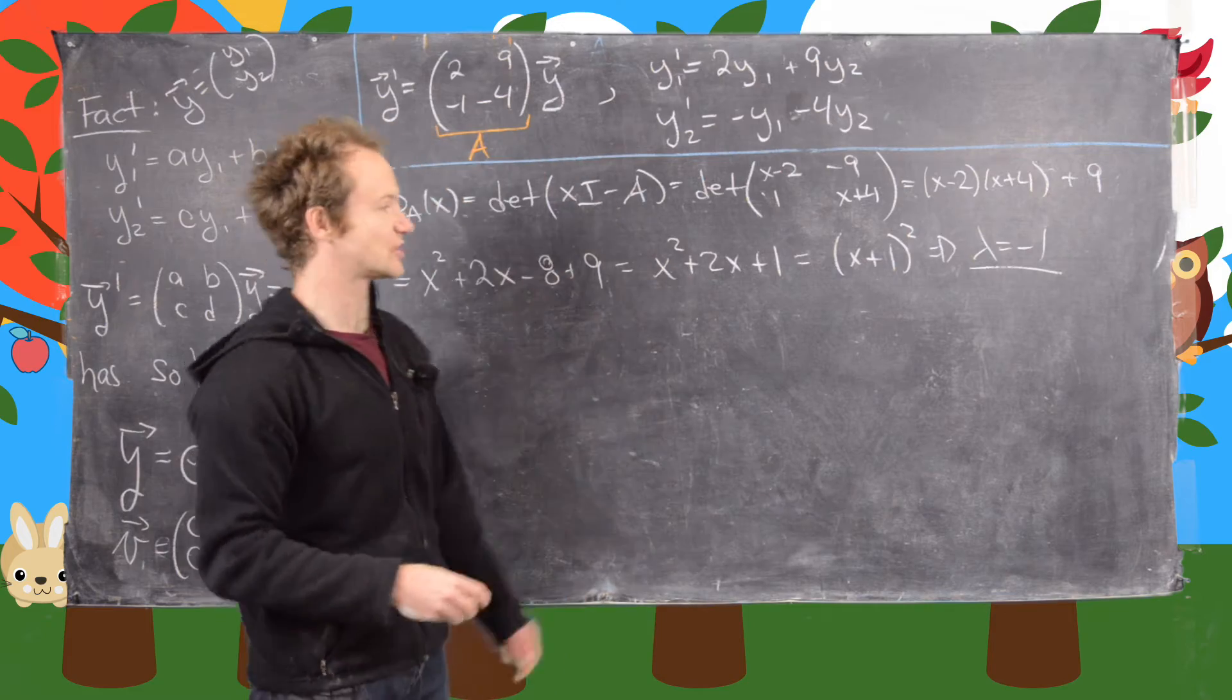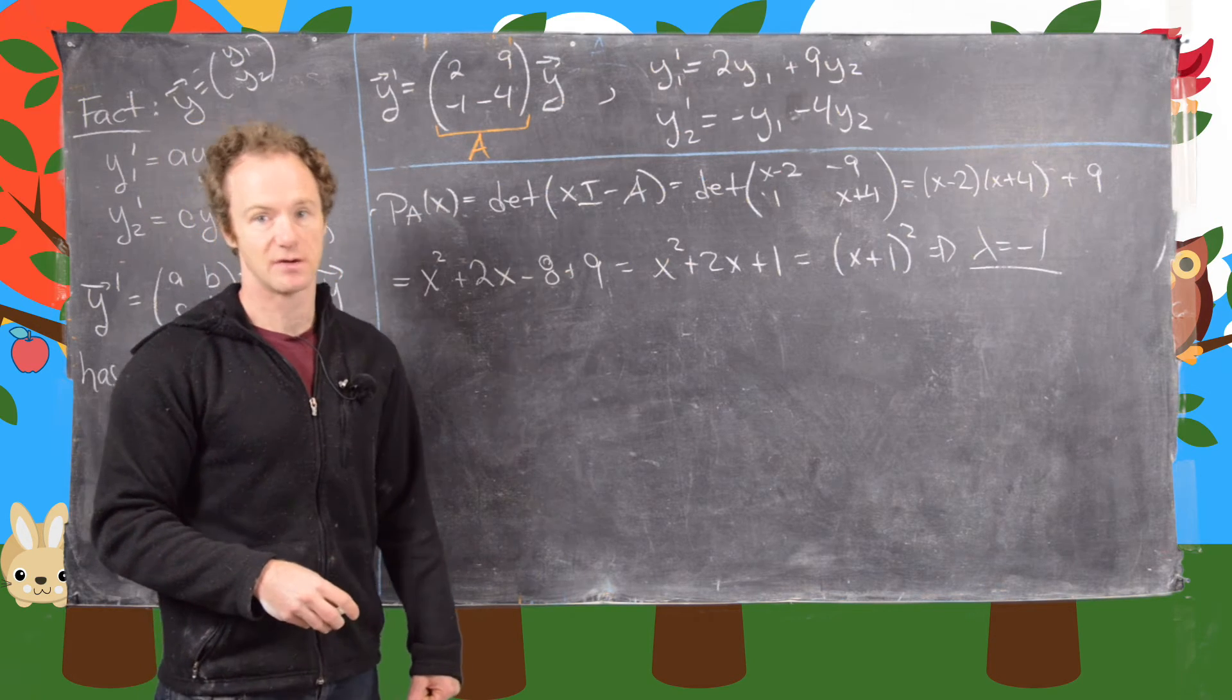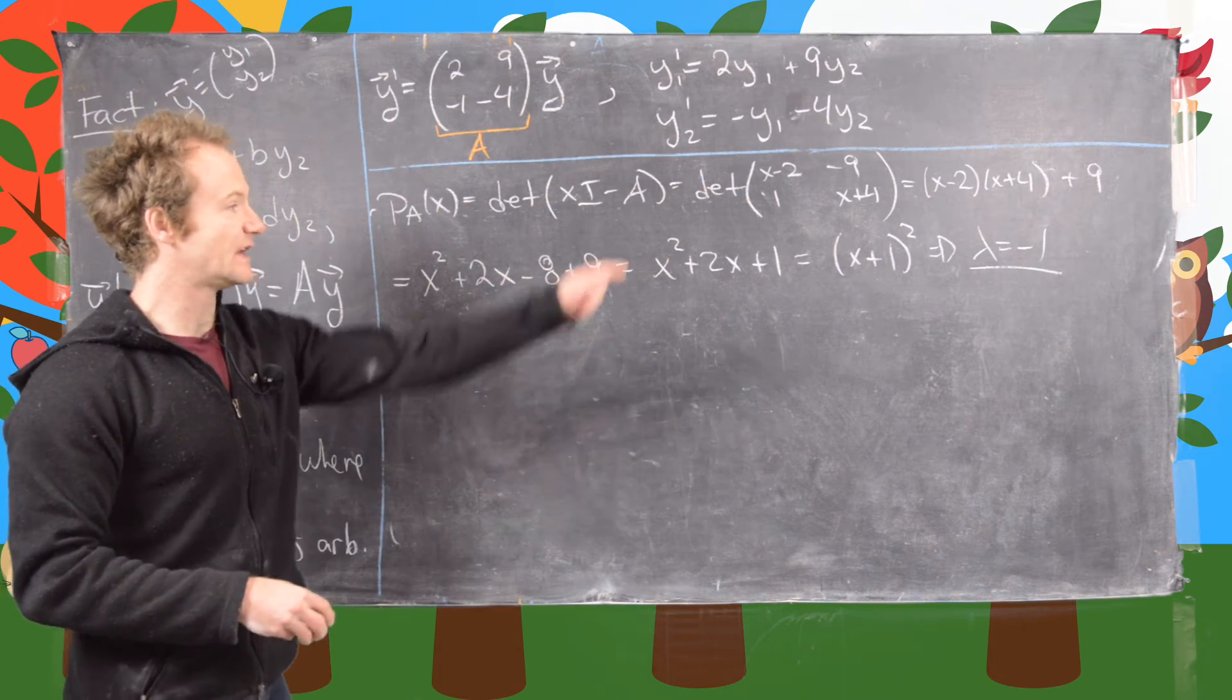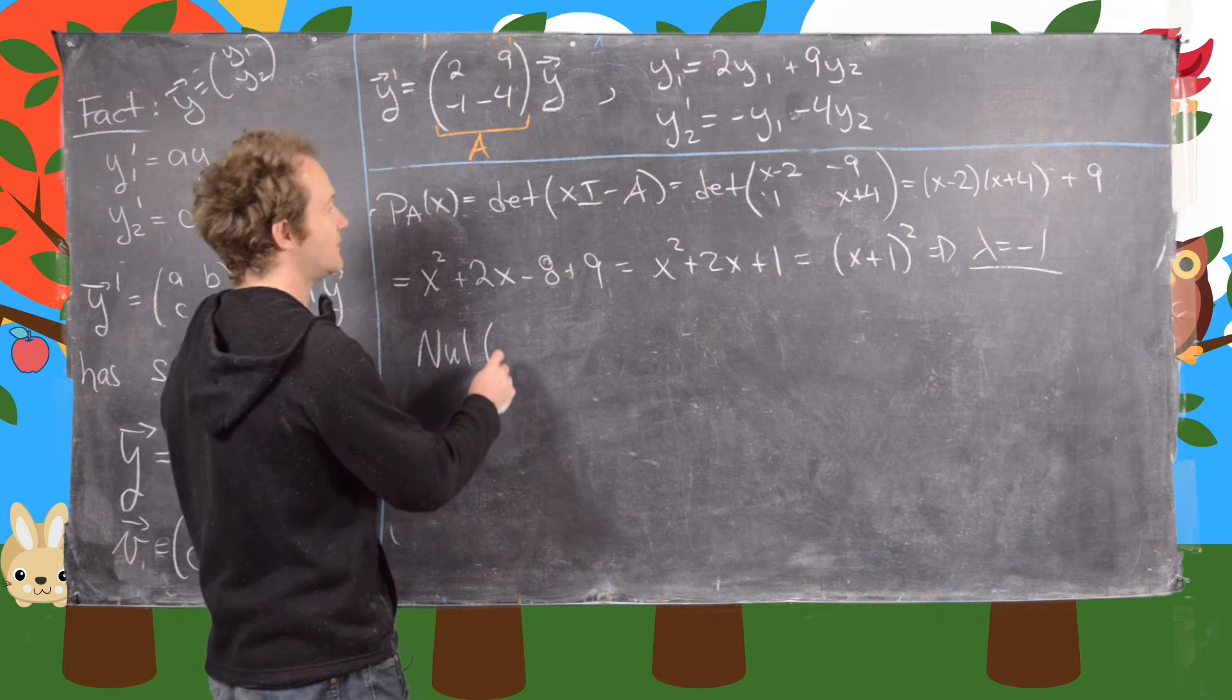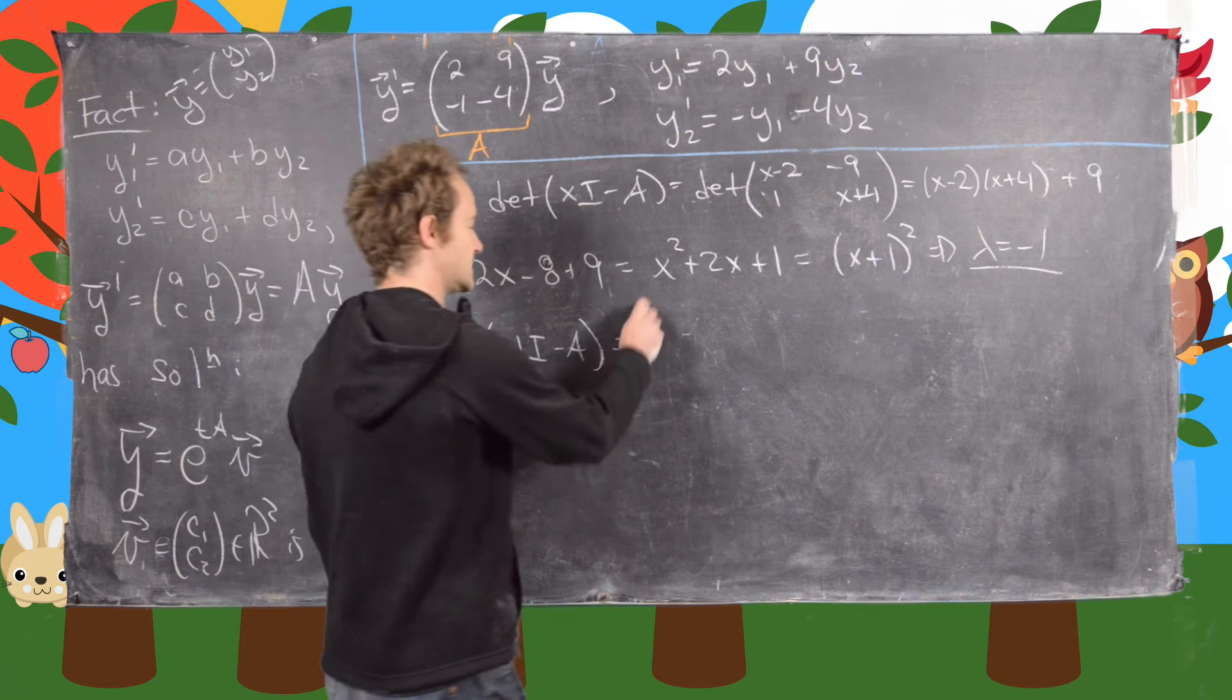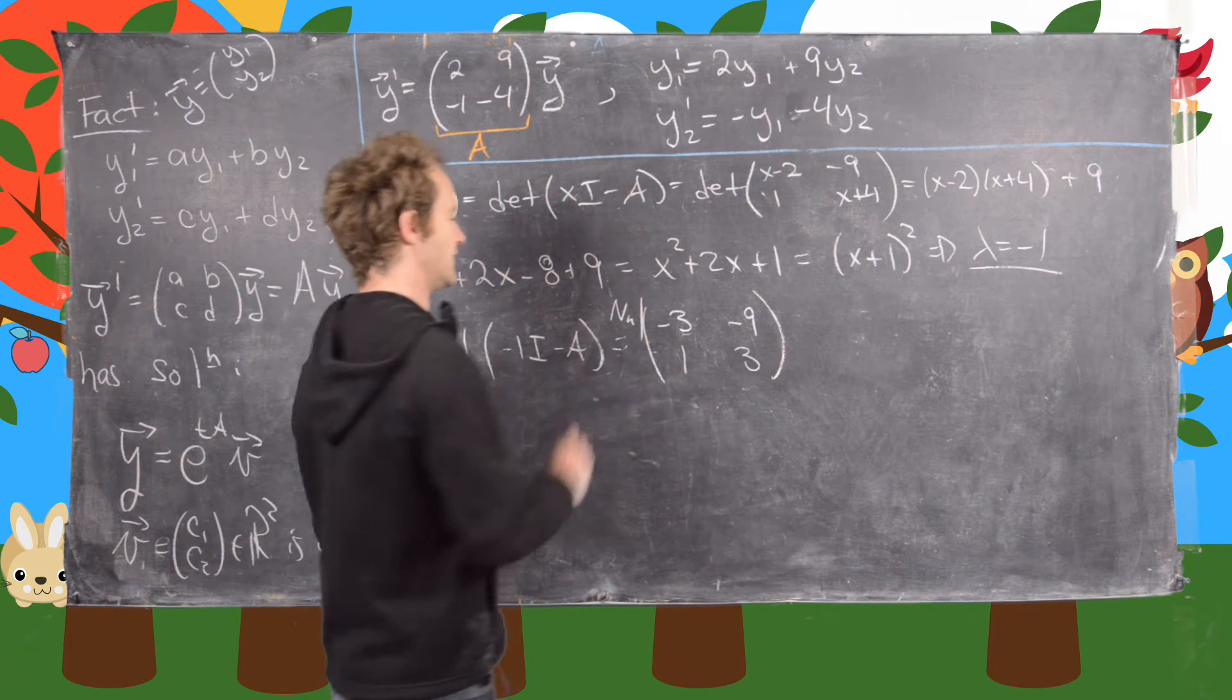And then again, since we have a 2x2 matrix, we automatically know this is not diagonalizable, because if it were diagonalizable, it would be a multiple of the identity, but that means it would commute with everything, but that means it would have to start off as a multiple of the identity. And obviously it didn't. So now we need to find the eigenvector that goes along with that eigenvalue. In other words, we need to look at the null space of minus 1 times the identity minus A, which is the same thing as plugging in minus 1 for x into this matrix. So that's going to give us minus 3, minus 9, 1, and then that's going to give us 3. So, and that's the null space of that matrix.